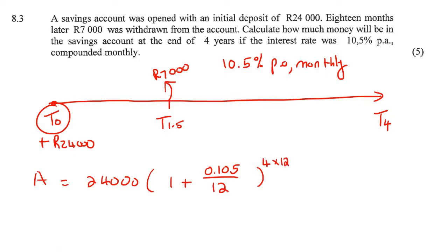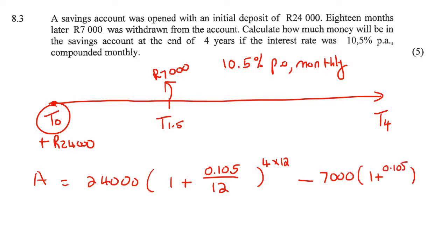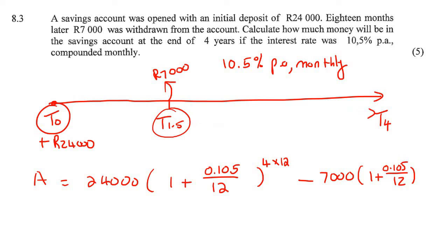Then we move to the next amount — the 7,000 withdrawal. We say minus, because we're taking money out, so minus 7,000. Then we do the same thing: 1 plus 0.105 over 12. How long is it from T1.5 to T4? That's 2.5 years, so 2.5 multiplied by 12, which is 30 months.